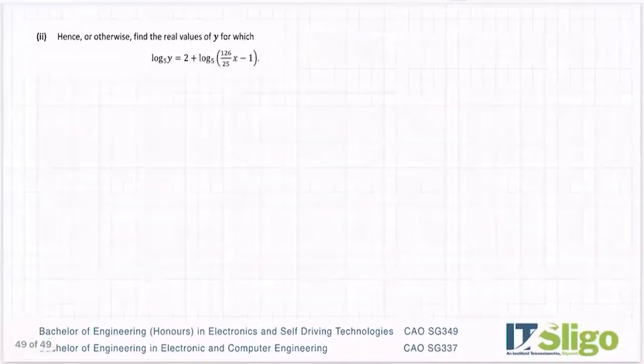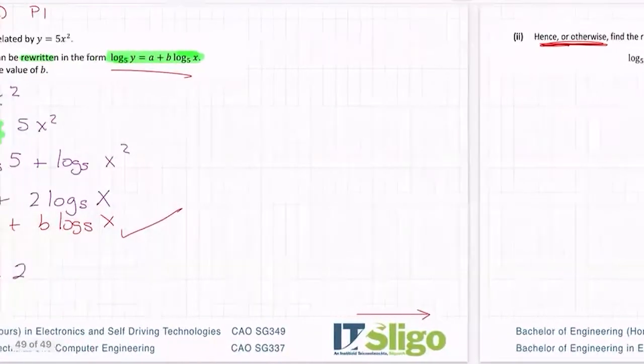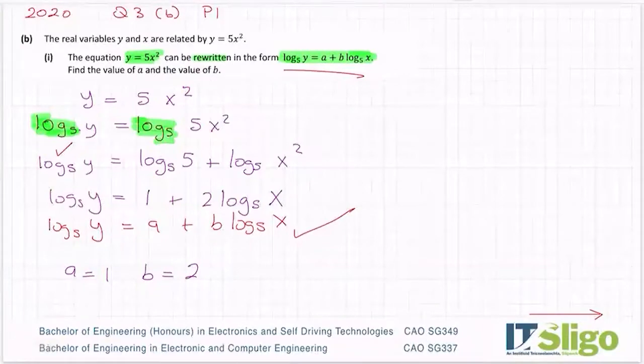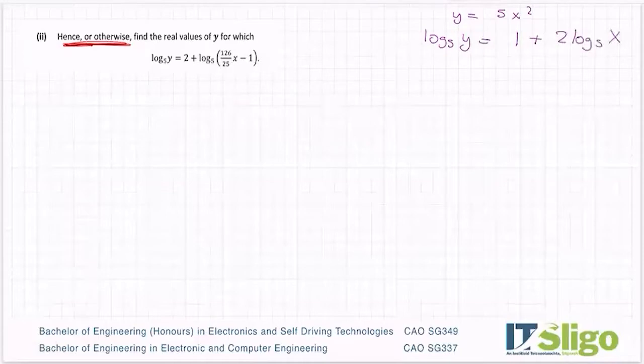Part B then, or part 2 of B. Hence or otherwise, find the real values of Y for which log to the base 5 of Y equals 2 plus log to the base 5 of 126 over 25 X minus 1. Hence or otherwise. So when I see that word hence, I know that the previous work is going to help me.